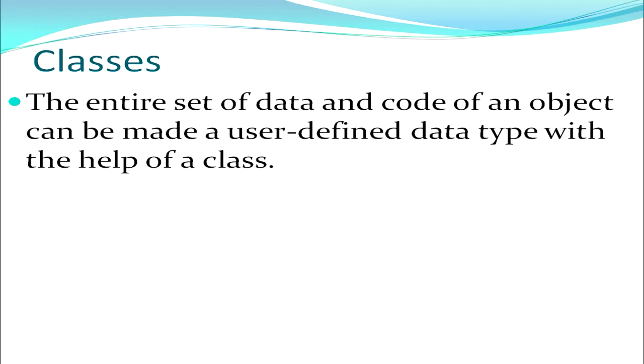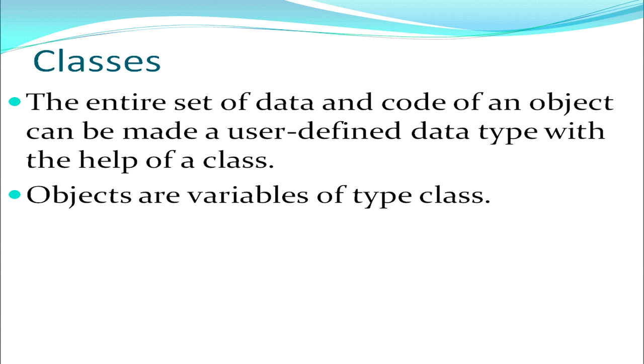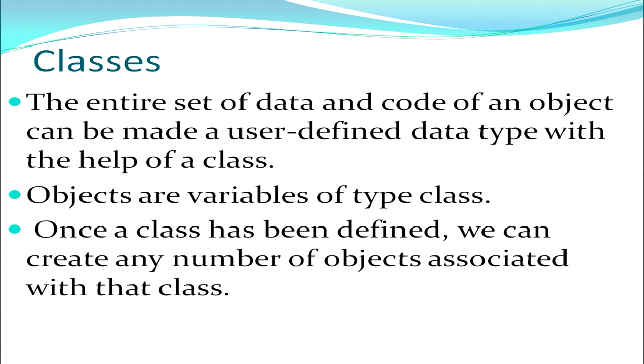After talking about objects, we talk about classes. A class is a user-defined data type. It contains a set of data and code — a set of functions which help to work with that data. Objects are variables of type class or instances of classes. Once a class has been defined, we can create any number of objects associated with that class. Each object is given its own memory location and is independent of each other, in spite of being created from the same class.